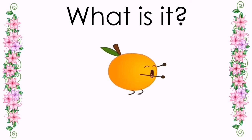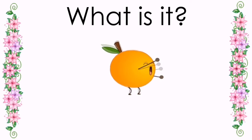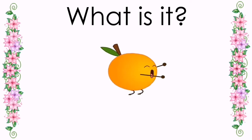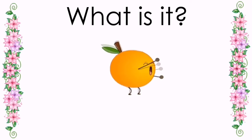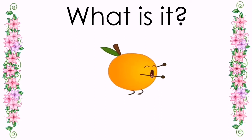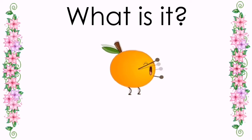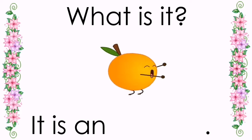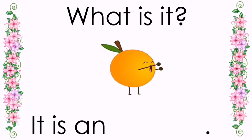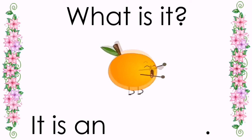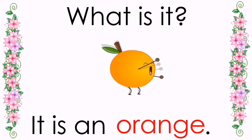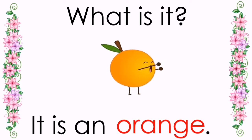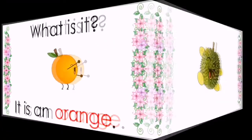Next, what is it? It is big, spiky, and has a hard outer shell. It may be sweet or sour. Its name is the same as its color. Good job kids! It is an orange. Again, it is an orange.